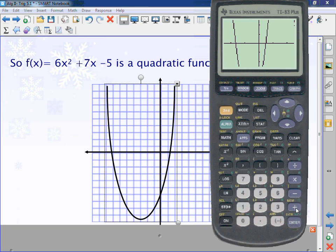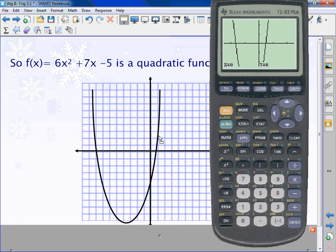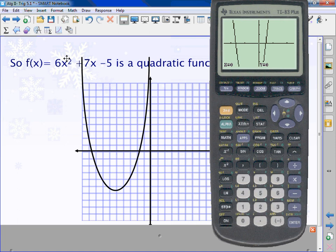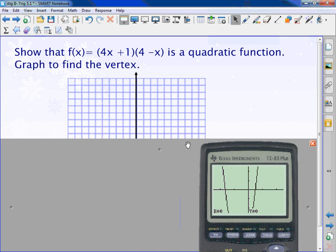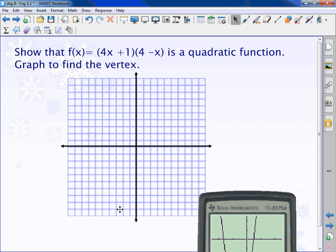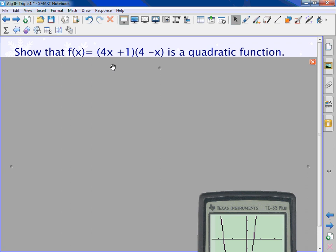What we're going to do this chapter is learn a lot about quadratics. Right now we're just dealing with using the calculator and looking at them. Eventually throughout the chapter I'm going to show you how to graph these without using a calculator and what we can use a quadratic for. First thing I want you to do. Show that f(x) = (4x + 1)(4 - x) is a quadratic function. So distribute first.